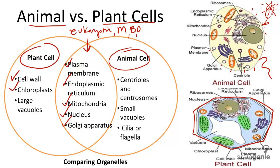Next, plants have structures called chloroplasts. They look green here because of the pigment chlorophyll they contain. Chloroplasts help plants undergo a process called photosynthesis, which helps plant cells survive and create sugar from sunlight. Animal cells do not have chloroplasts. Because they need to consume food, they must break down what they eat for energy — they cannot create their own energy.